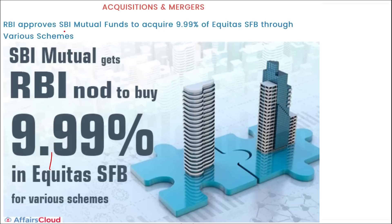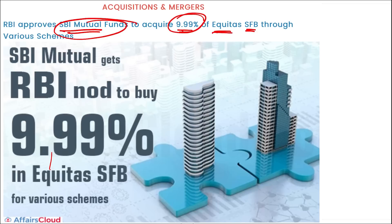SBI Mutual Fund will acquire 9.99% stake of Equitas Small Finance Bank through various schemes. RBI has approved SBI Mutual Fund to acquire this stake in Equitas Small Finance Bank.